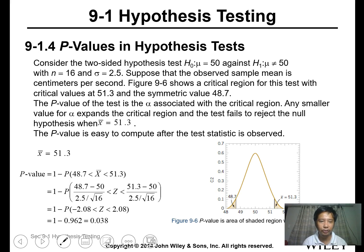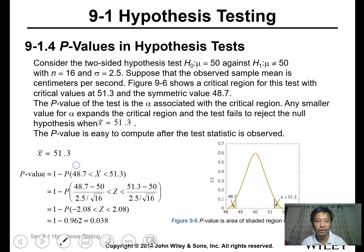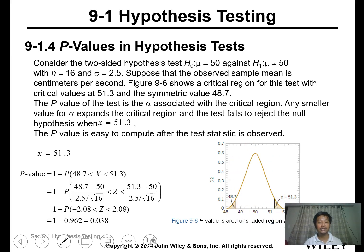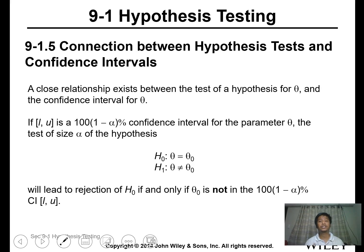For example, if we obtain a sample mean of 51.3, the p-value range is symmetric around 48.7 to 51.3. We take only the probability in the orange-colored region of the chart, which is one minus the probability of the uncolored region, calculated using the Z-table.